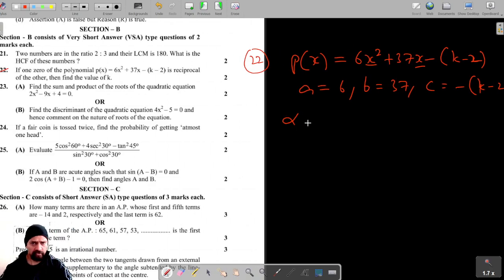Now it's given that one zero is the reciprocal of the other, so let the zeros be alpha and beta, and let alpha be the reciprocal of beta.